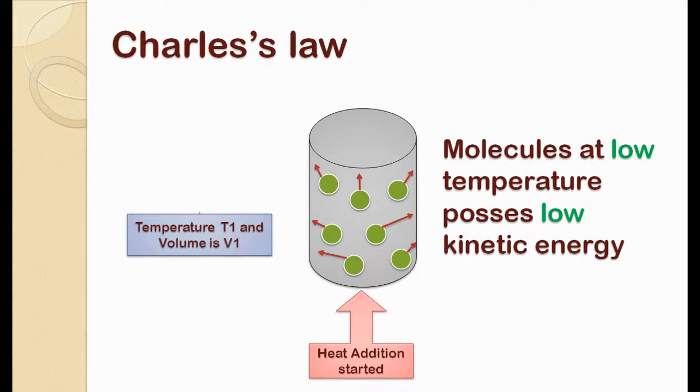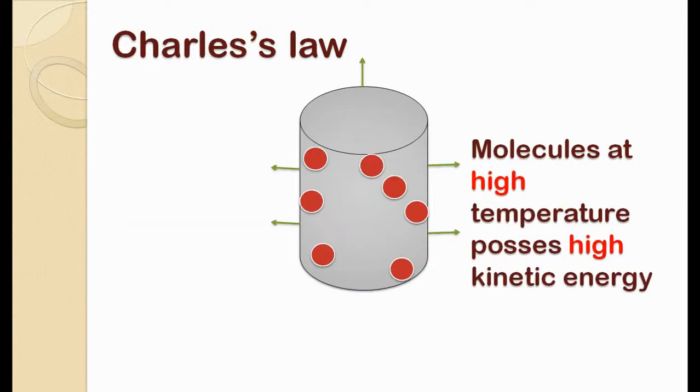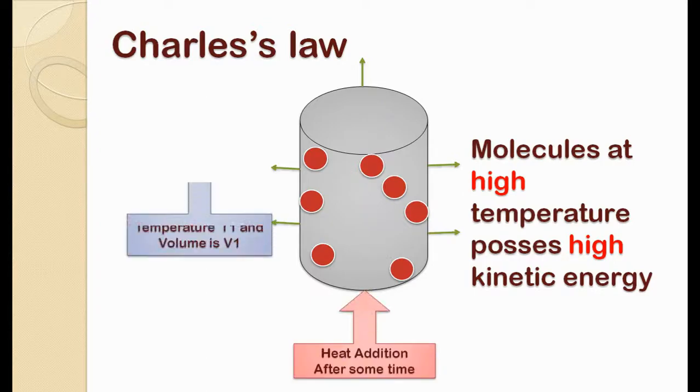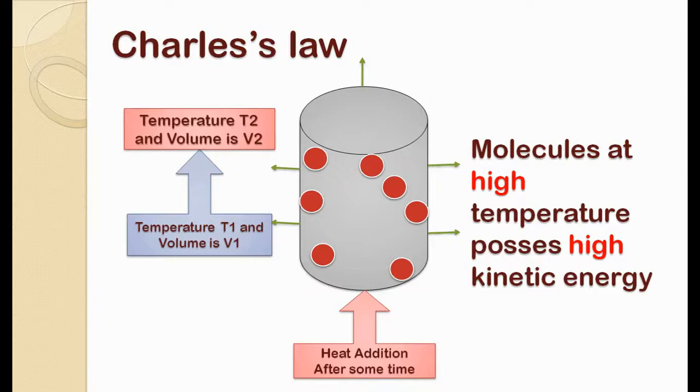Due to this high speed movement they start to collide with cylinder walls more often. This collision of gas molecules to the cylinder wall makes the cylinder walls which are flexible in nature to expand. So in short due to heating of gas its volume gets increased. Now the temperature of gas is T2 and volume it has acquired is V2.